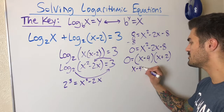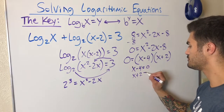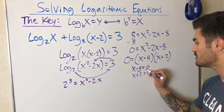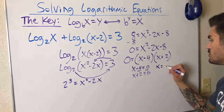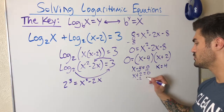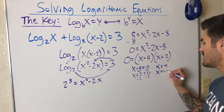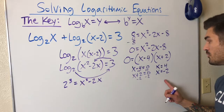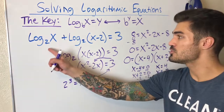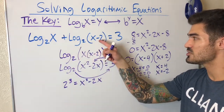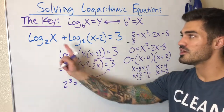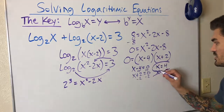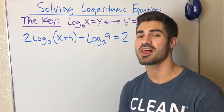Setting each factor equal to zero: x − 4 = 0 gives x = 4, and x + 2 = 0 gives x = −2. I need to plug both back into the original equation. Plugging in 4: log₂(4) and log₂(2) are both fine. Plugging in −2: it immediately fails the domain. So x = −2 is crossed out, and the solution is x = 4.